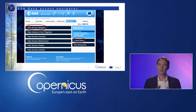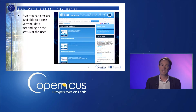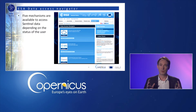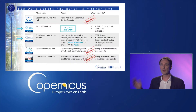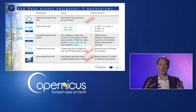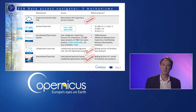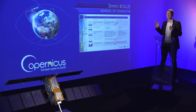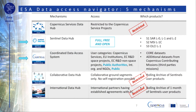If we jump to the Data Access Navigator page, we can read the five mechanisms that are available to access Sentinel data, depending on your user status. This table summarizes almost everything — some mechanisms are dedicated to specific users, such as the Copernicus services themselves. So in the next slides, we will focus mostly on the two mechanisms that are not restricted: the Sentinel Scientific Data Hub, which is full, free and open, and the Coordinated Data Access.